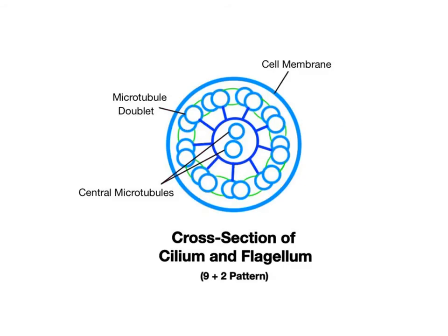One last note about the ultrastructure of the microtubules found within cilia and flagella. These microtubules are mounted to the cell through a short basal body, which consists of nine triplets of microtubules similar to the structure of the centrioles. But as the cilia or flagella extend away from the basal body, their structure changes. They now consist of nine doublets of microtubules arranged in a ring, with a single pair of microtubules in the center. This is referred to as the 9+2 pattern of microtubules.